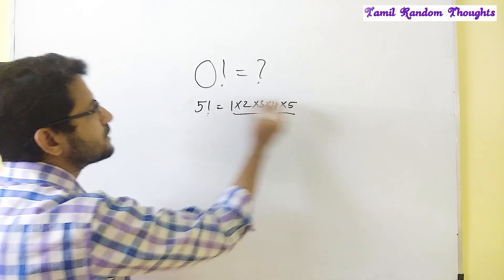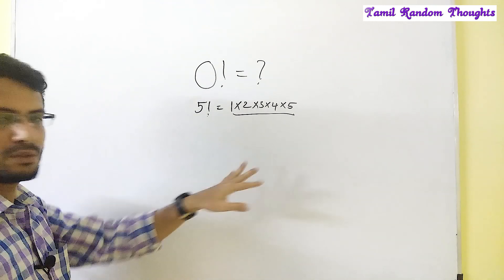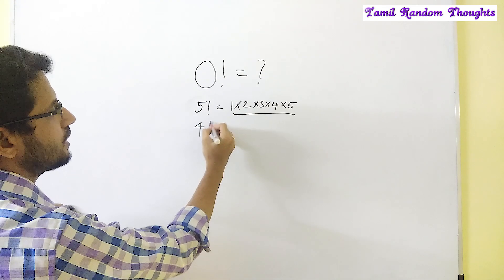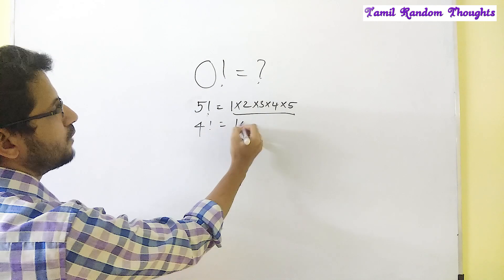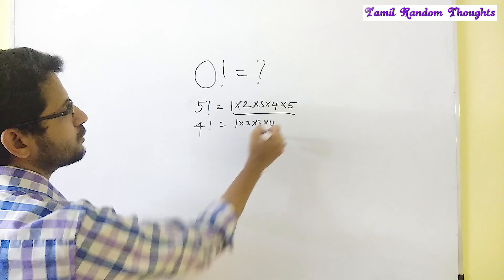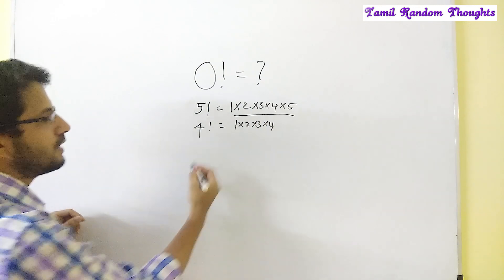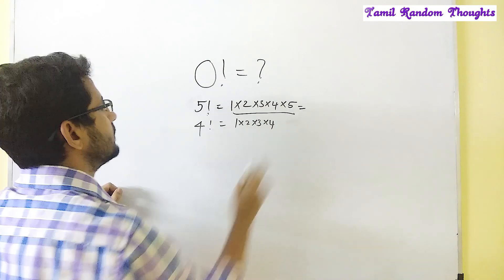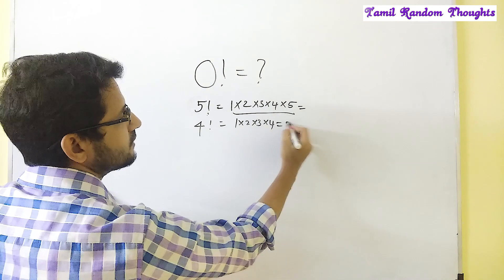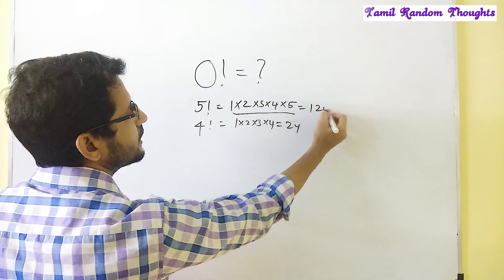If we represent this, the factorial is a symbol. Now, 4 factorial is 1 into 2 into 3 into 4. What is the answer? The answers are 24 and 120.